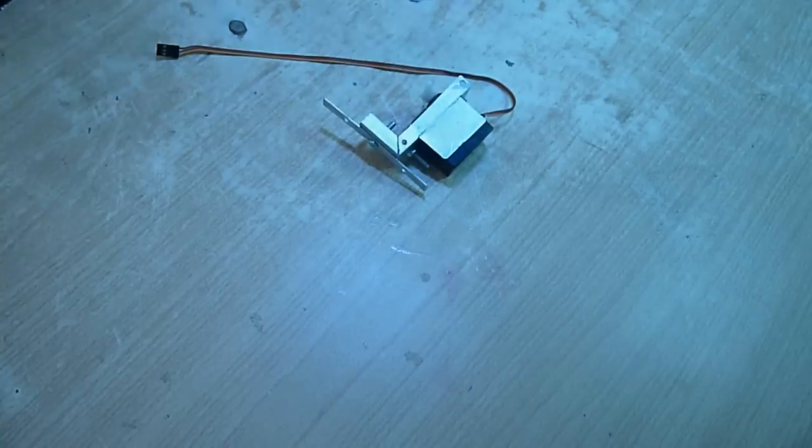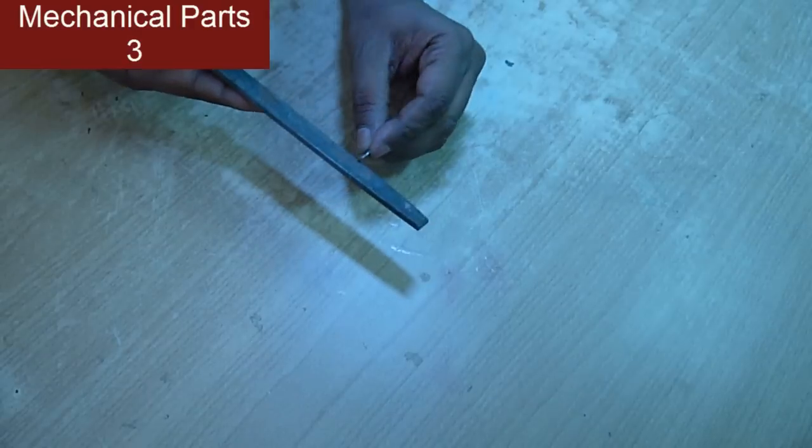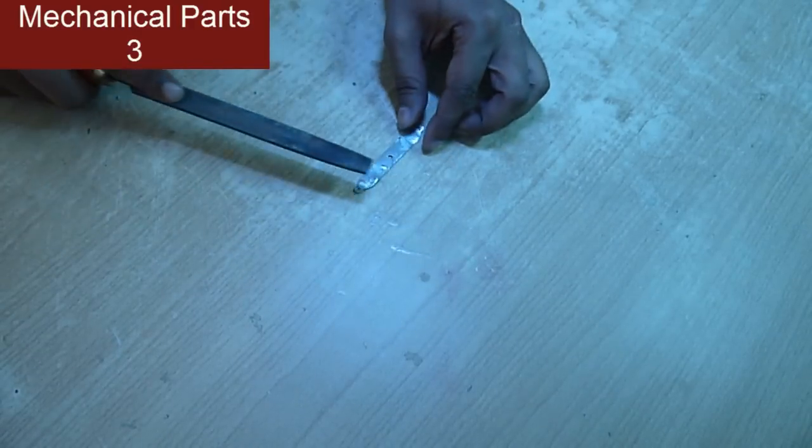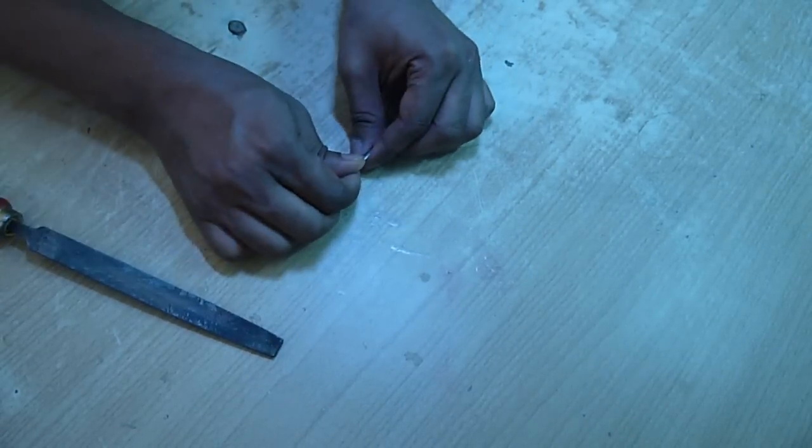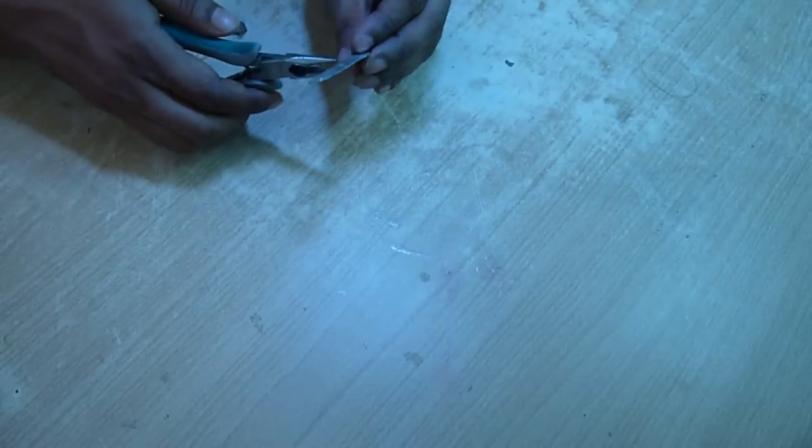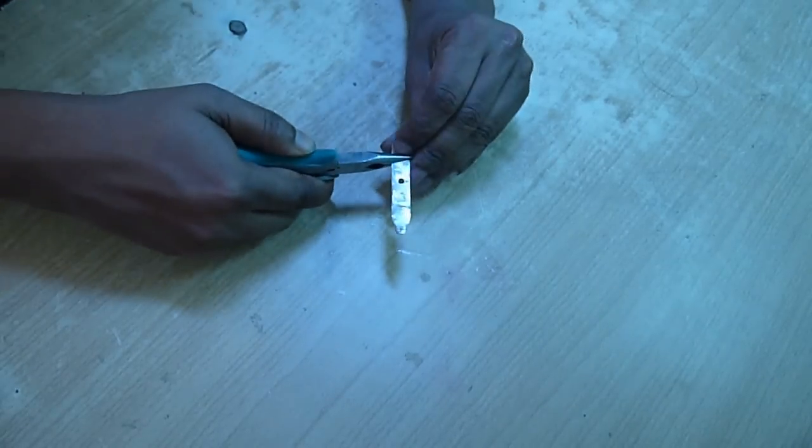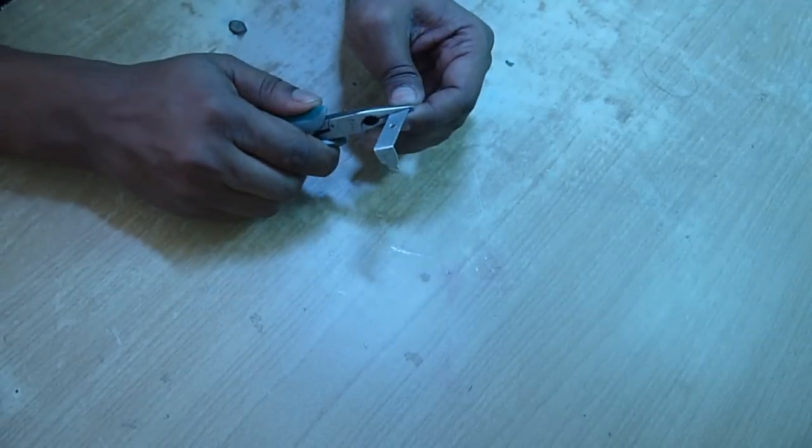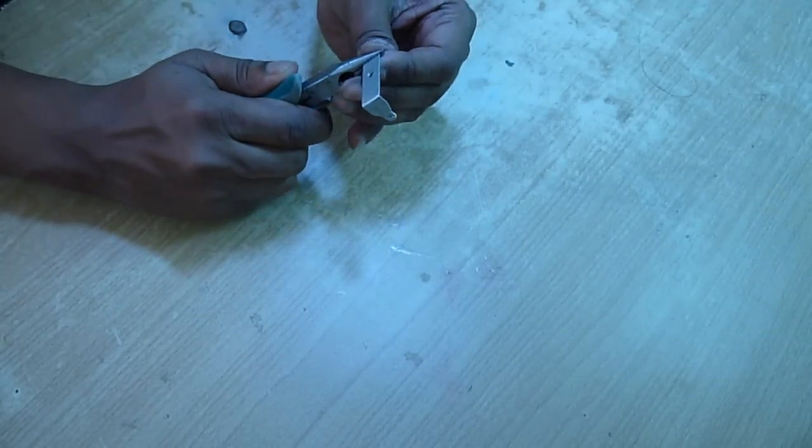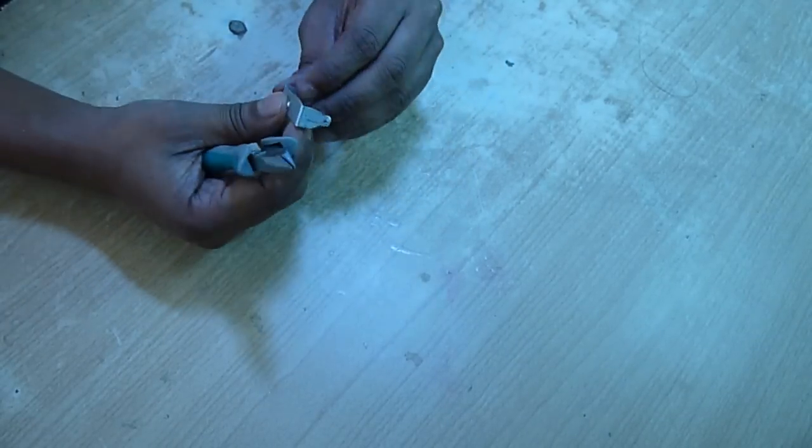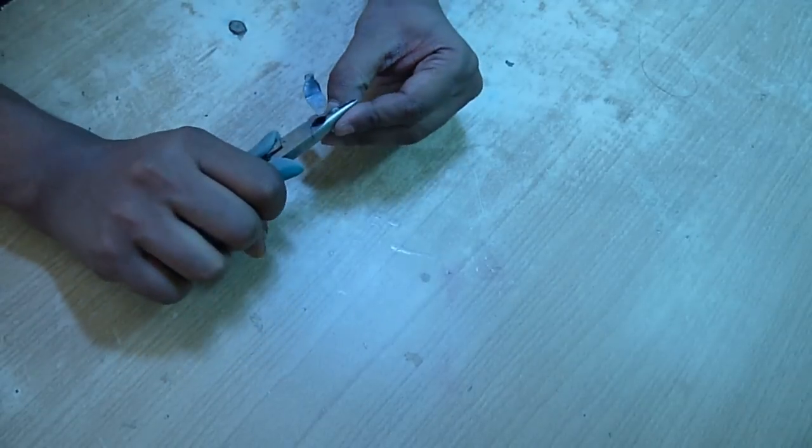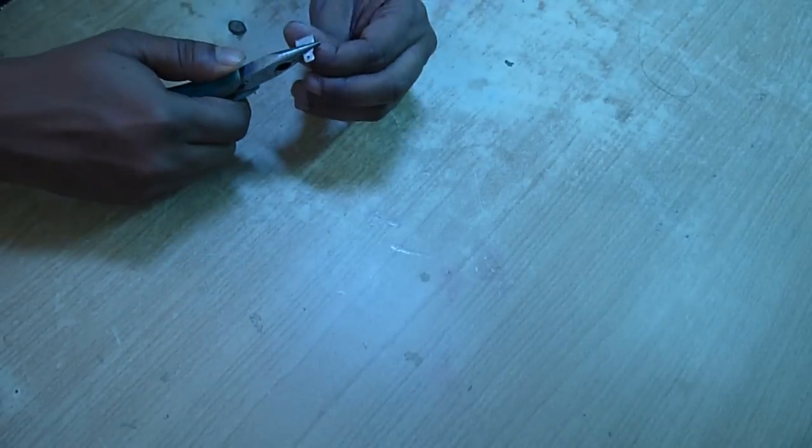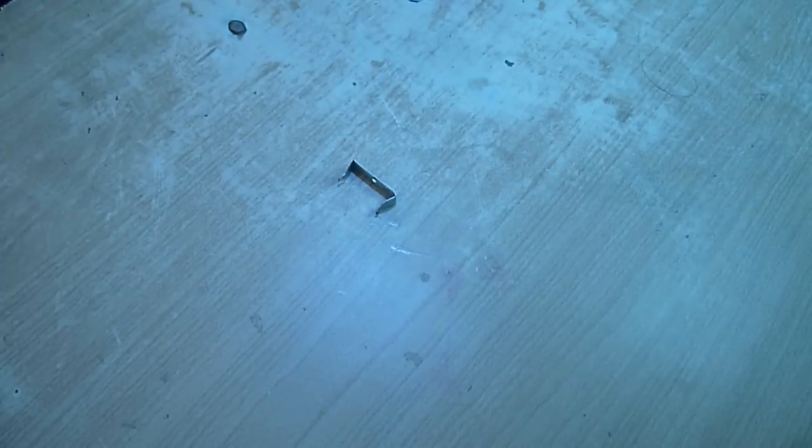Now we will be making part three which will be used to hold the eyeballs. So first cut an aluminum sheet like this and then bend using a plier. Give it a shape like this. You have to make two pieces.